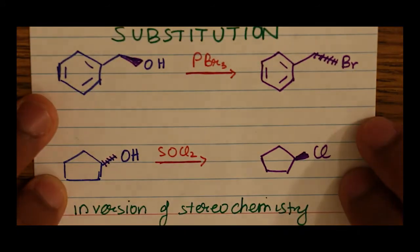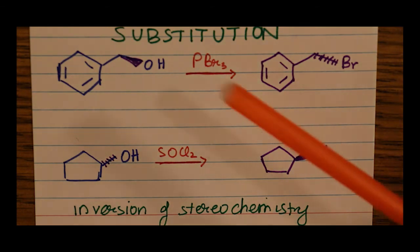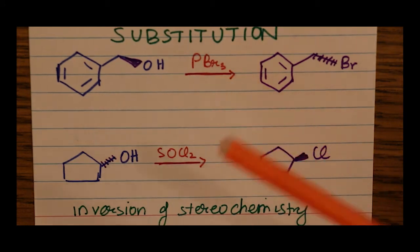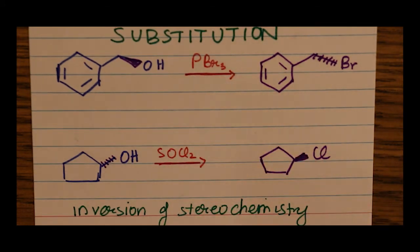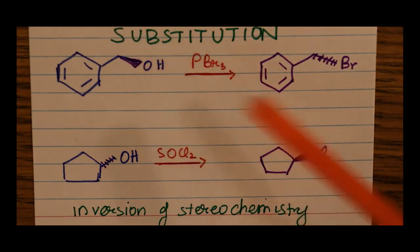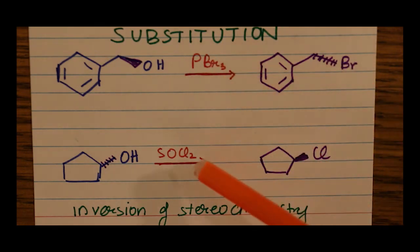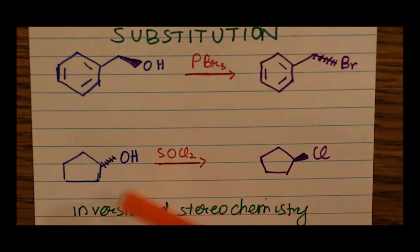Another group of substitution reactions are SN2 substitutions, meaning they happen in one step. The two reagents I'd like to cover are phosphorus tribromide and thionyl chloride. OH groups are generally not very good leaving groups, but in the presence of these reagents they do leave and are substituted with a Br, and in this case a Cl.